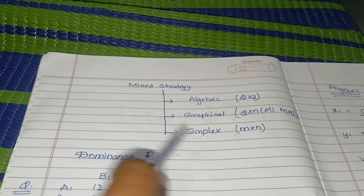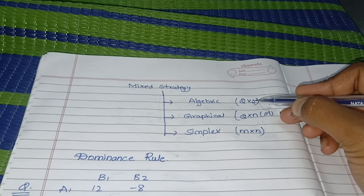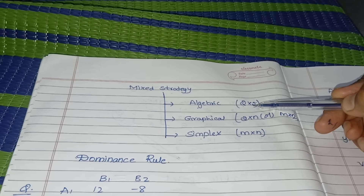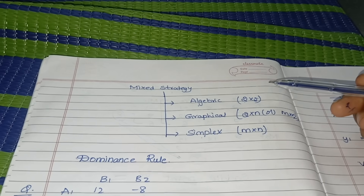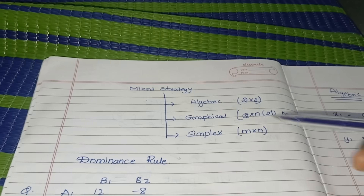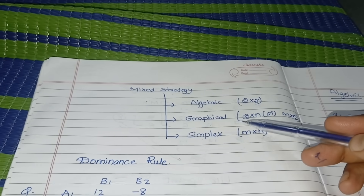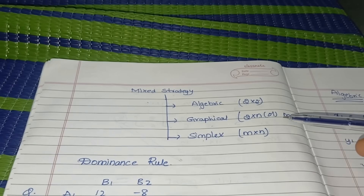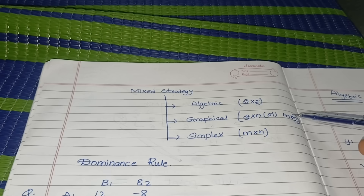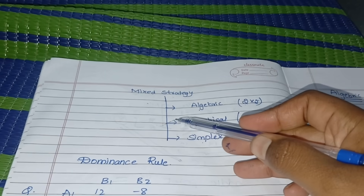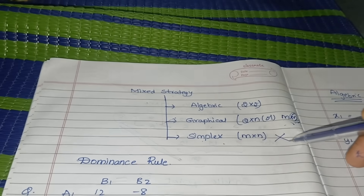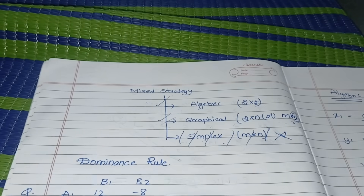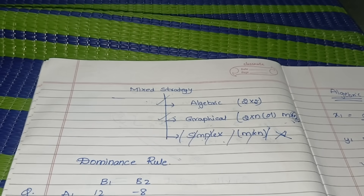The algebraic method can be used only when the question contains exactly two rows and two columns. If not, you cannot use the algebraic method. For the graphical method, the question should have either two rows (with n columns) or two columns (with n rows). For the final examination, focus especially on algebraic method and graphical method; you can ignore simplex method.